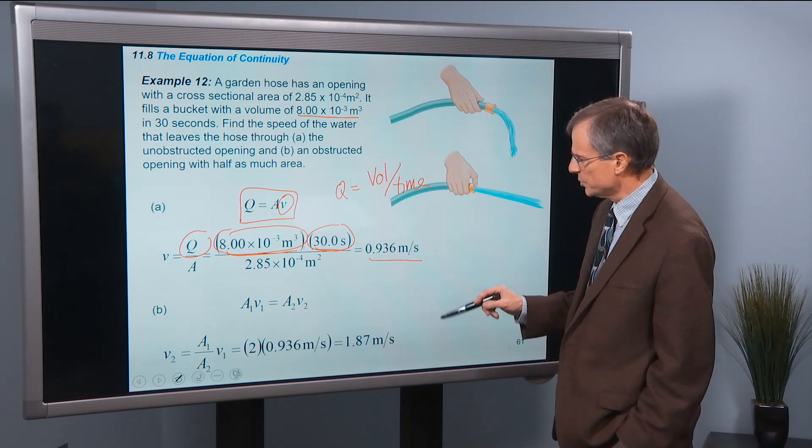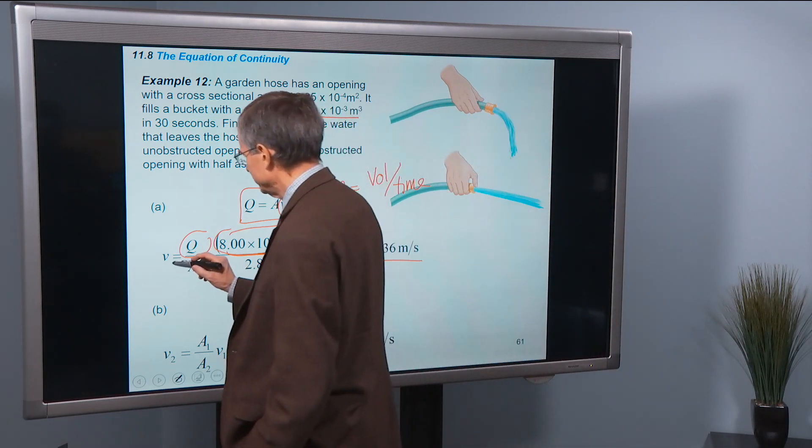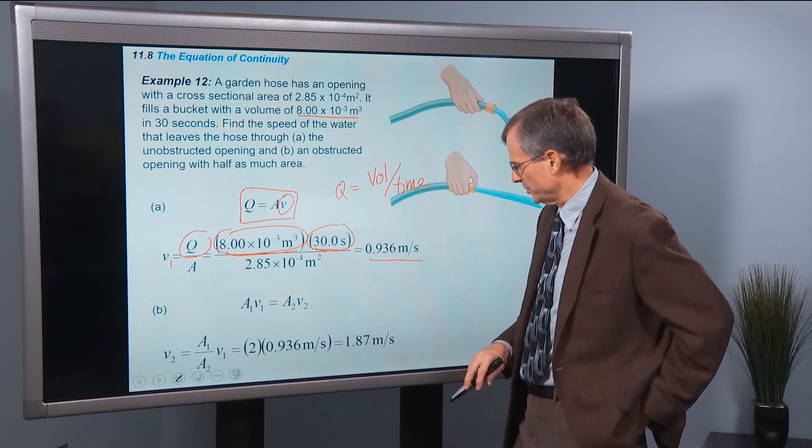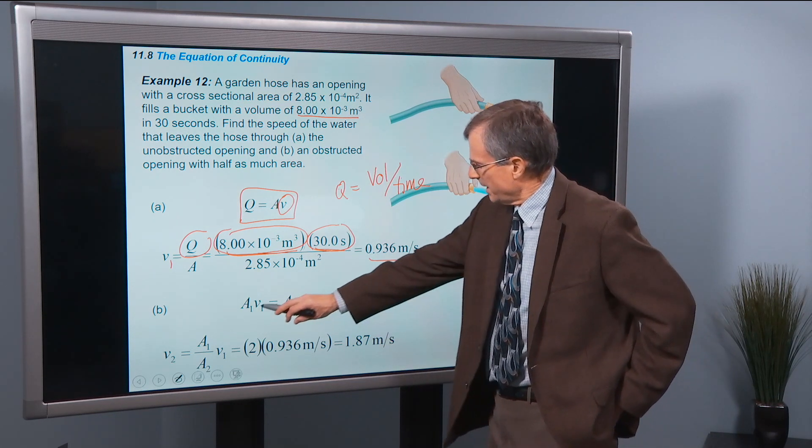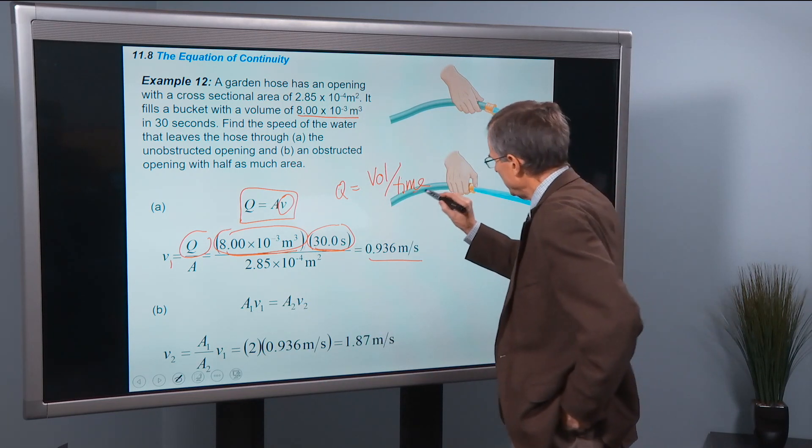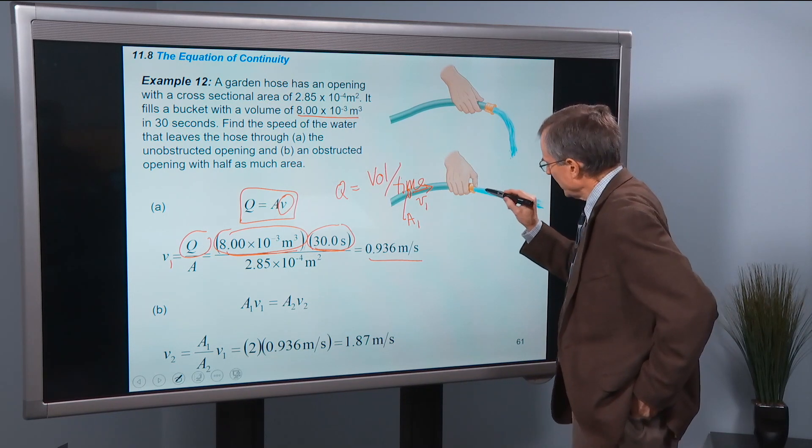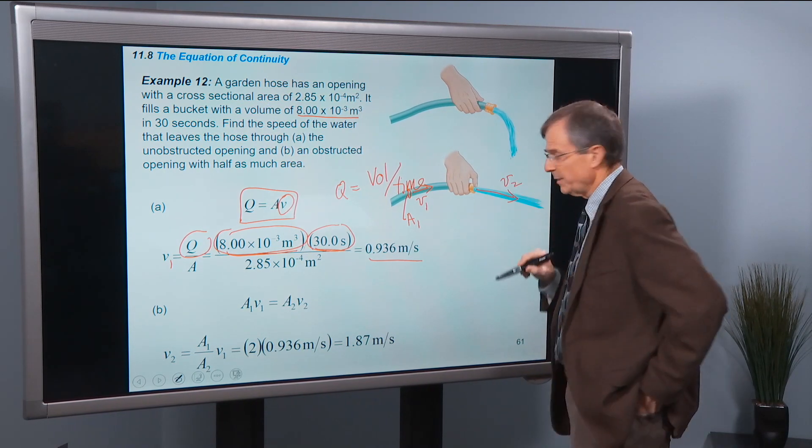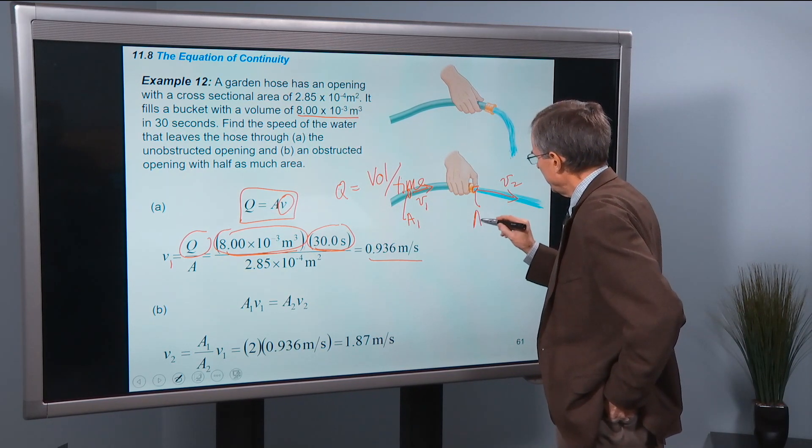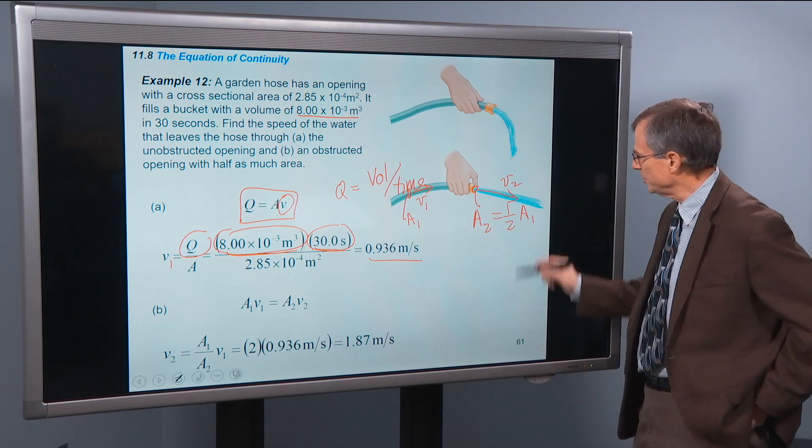But suppose then we constrict it down, and we call this v1, and we want to restrict it down to a smaller cross-sectional area. So this would be the speed here, v1, with cross-sectional area a1. But then here, we have v2, which we're going to expect to be larger, because the area is half, a2 is half of a1. So let's see if we actually do get a higher velocity here.